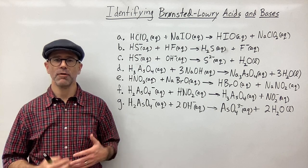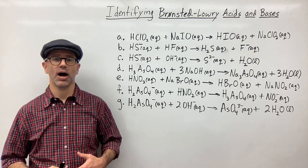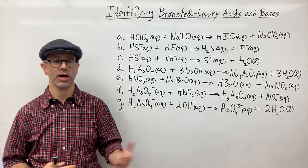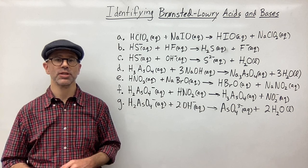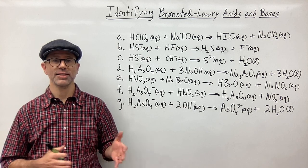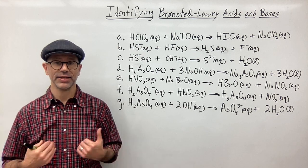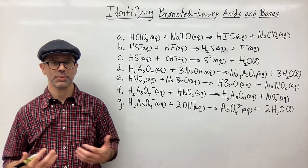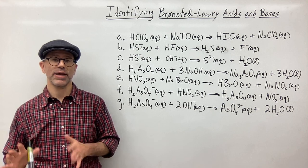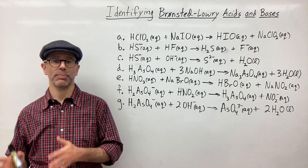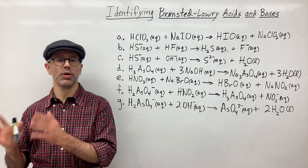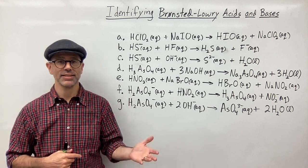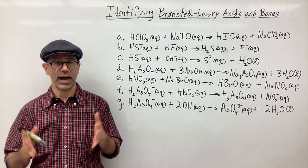The definition of a Bronsted-Lowry acid is something that donates a proton or H⁺ to some other substance or species. And the Bronsted-Lowry base is something that gains or accepts the proton from some other substance or species. So as long as we have a transfer of a proton or H⁺ from one thing to another, we can identify what the acid and the base is for that reaction.